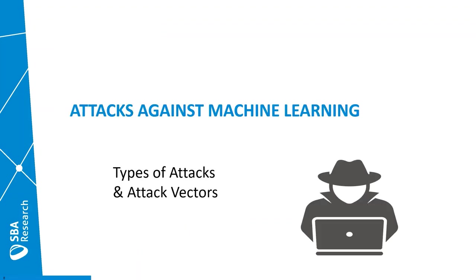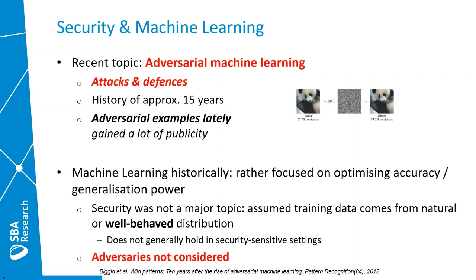Let's now take a closer look at some of the attacks that machine learning models can be subject to. Security of machine learning is in general a rather recent topic, also sometimes called adversarial machine learning, a field that deals with attacks on the machine learning process and defenses against those attacks. While maybe the earliest attacks were publicized around 15 years ago, it may have been in the last five years that adversarial examples have gained a lot of publicity. Machine learning historically was rather focused on optimizing accuracy and generalization power, and security was simply not a major topic. It was assumed that training data would come from natural and well-behaved distributions, which doesn't generally hold in security-sensitive settings, and adversaries were mostly not considered.